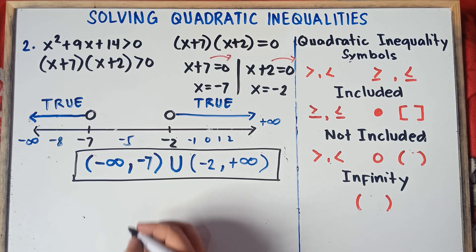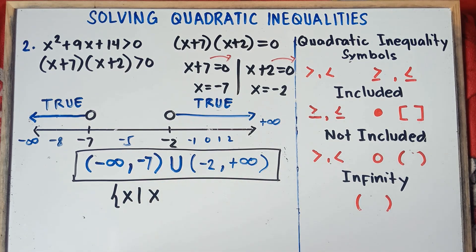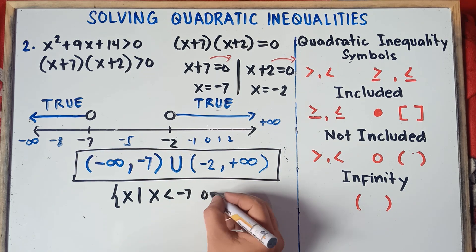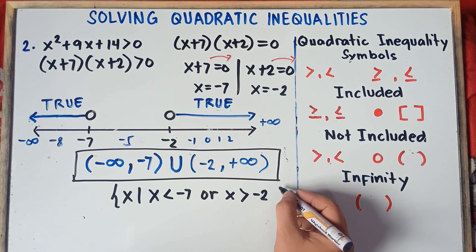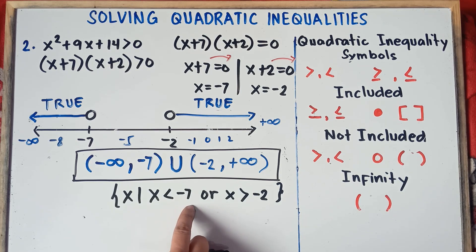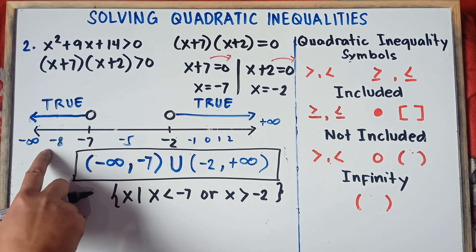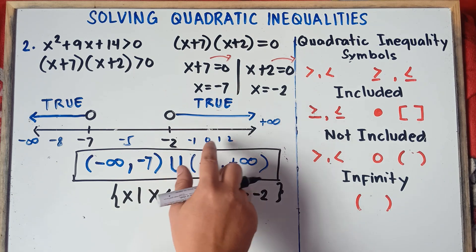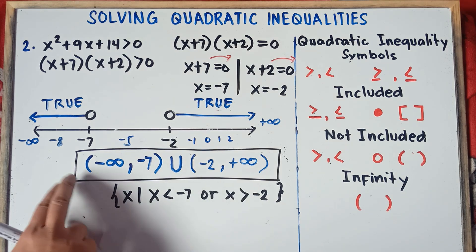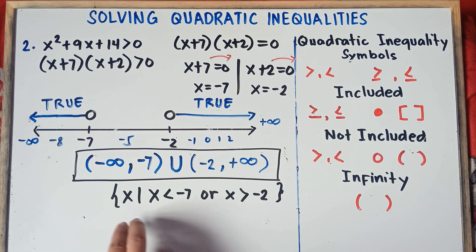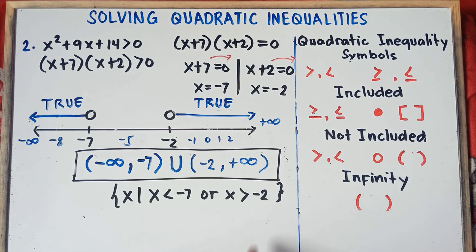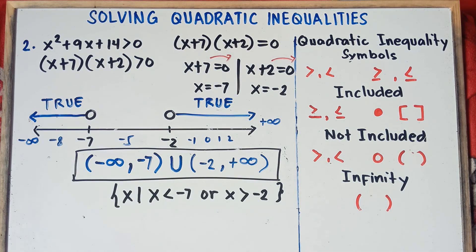For set builder notation, you write: the set of all x such that x is less than negative 7, or x is greater than negative 2. So x less than negative 7 means it could be negative 8, negative 9, negative 10, and so on. Or x is greater than negative 2, meaning it could be negative 1, 0, 1, 2, and so on. You can write either interval notation or set builder notation — both are acceptable.